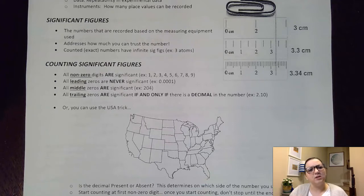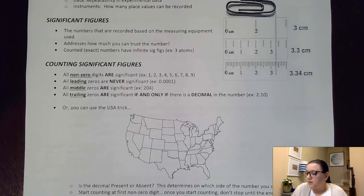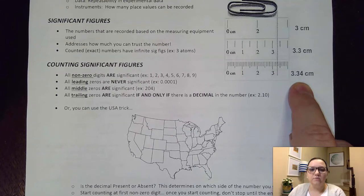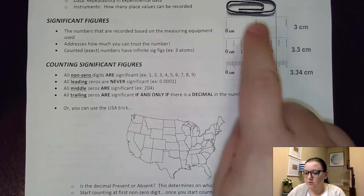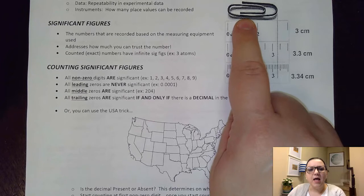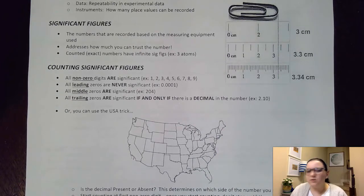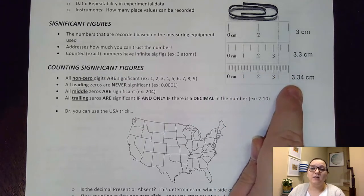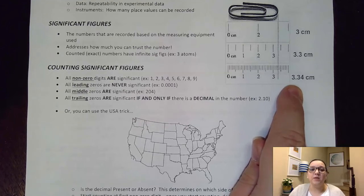The other reason is that it's all about how much do I trust my number. For example, here you can see they reported these three different values to a very different number of digits, even though this is the exact same paper clip, and the reason why is because I can trust these three rulers very differently. The markings are a lot closer together on this ruler, so I can trust my number to a greater level of precision — that's where significant figures comes in.